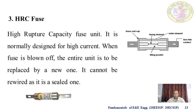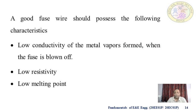The HRC fuse, or High Rupturing Capacity fuse, is normally designed for high current. When the fuse is blown off, the entire unit must be replaced by a new one — it cannot be rewired as it is a sealed unit. A good fuse wire should possess the following characteristics: low conductivity of metal vapors formed when the fuse is blown off, low resistivity, and low melting point.